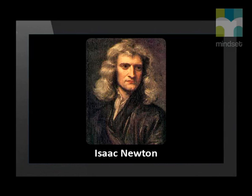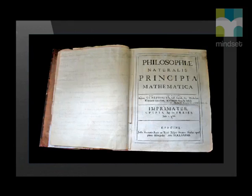Who was Newton? Let's start by finding out something about the man. Isaac Newton was an English physicist and mathematician. In the 17th century, he published the most influential work of physics of all time. In this book, he defined three laws of motion to describe the relationships between forces that act on an object and the motion of an object.